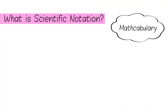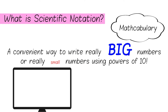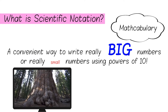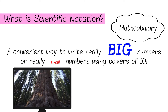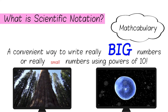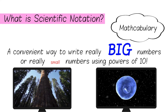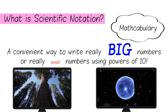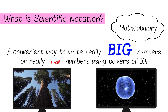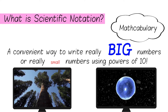Let's check out our mathcabulary that we covered last lesson. Scientific notation is a convenient way — an easy way — to write really big numbers or really small numbers using the powers of 10. So whether you're talking about the weight of a giant sequoia tree or the weight of a cell, we can write those numbers using scientific notation and make it quicker and easier to write the values of numbers.